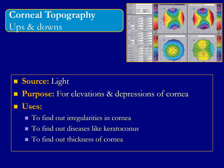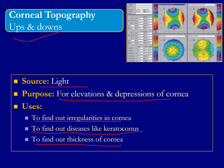So corneal topography shows the ups and downs in the cornea. The source is light. The purpose is to identify elevations and depressions in the cornea. Its uses are: to find out irregularities in the cornea; to find out diseases like keratoconus, in which the cornea is protruded forward; and to find out the thickness of the cornea — to see where the cornea is thick and where it is thin.